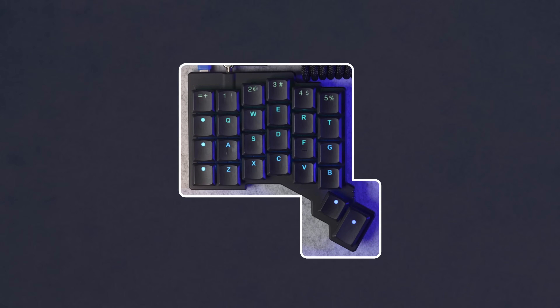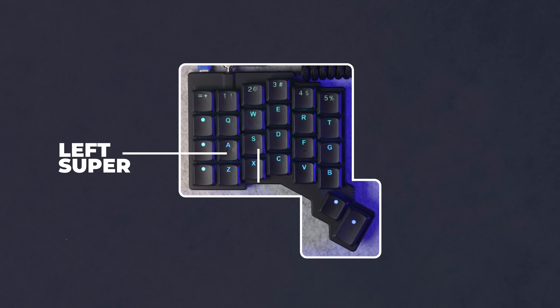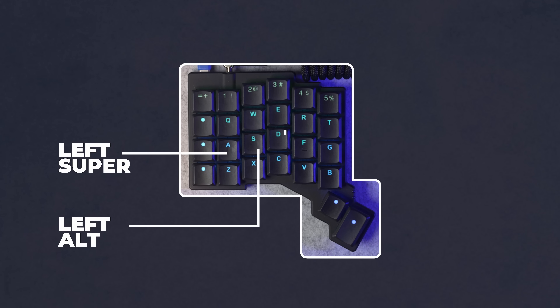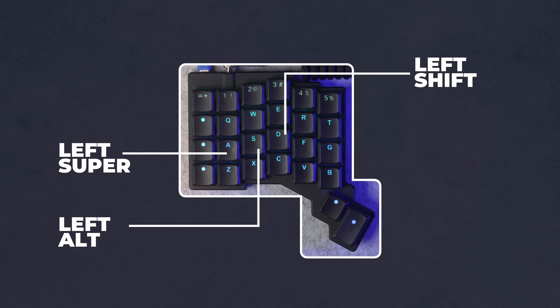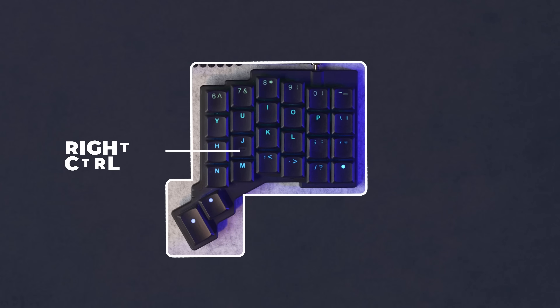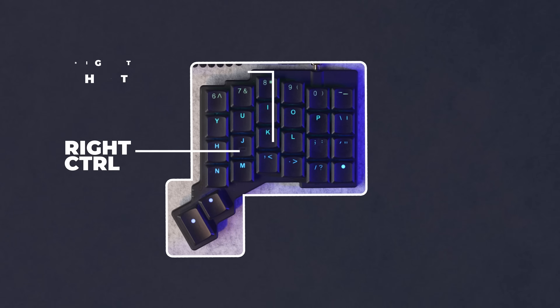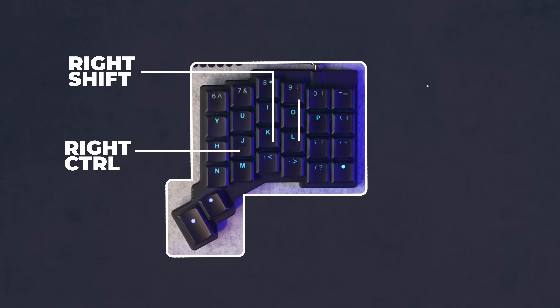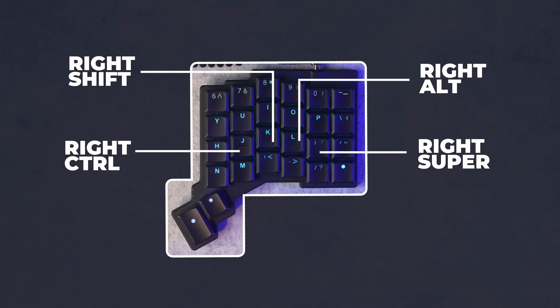As for what the modifier keys actually are, in my configuration I have it as follows. On the left-hand side, the A key when held acts as left super, the S key when held acts as left alt, the D key as we saw before is left shift, and the F key acts as left control. As for the right-hand side, this is the exact same layout but mirrored, meaning that each finger on my right hand has the exact same modifier as found on each finger of my left hand. This means that when I hold the J key it acts as right control, the K key is right shift, the L key is right alt, and the semicolon key is right super.